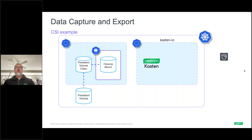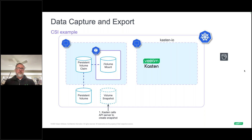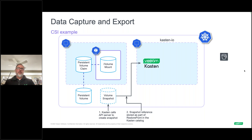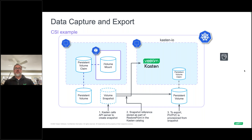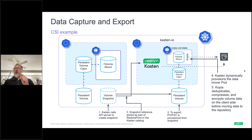Kasten takes advantage of native storage capabilities — in this example, Longhorn — but any CSI driver supporting volume snapshots works. We execute a volume snapshot against the persistent volume of the application or VM. Once that snapshot is generated inside Kubernetes, Kasten makes a reference to it along with all associated metadata — called a restore point in our catalog. We then mount that snapshot inside our namespace as a persistent volume, and deduplicate, compress, and encrypt the data before sending it off to object storage.